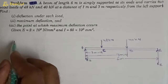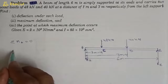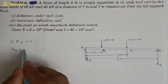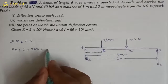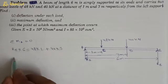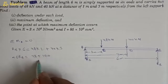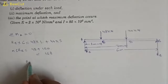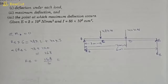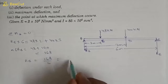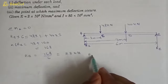First, we find the reactions. Taking the sum of moments about point A equal to zero: RB into 6 meters equals 48 into 1 meter plus 40 into 3. So 6·RB equals 48 plus 120 equals 168, giving RB equals 168 divided by 6, so RB equals 28 kilo-newtons.